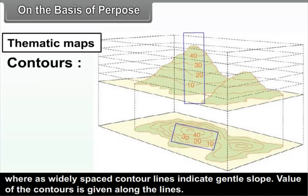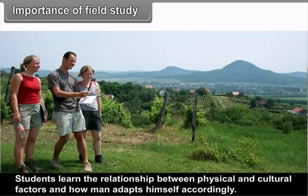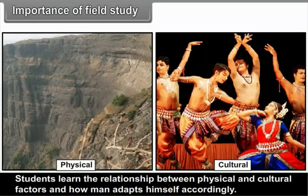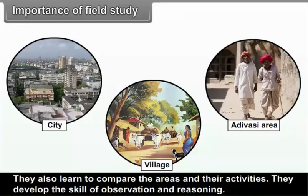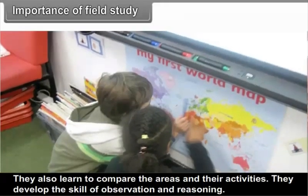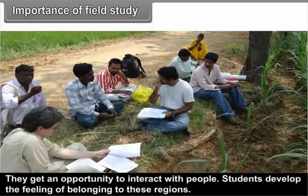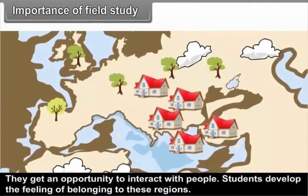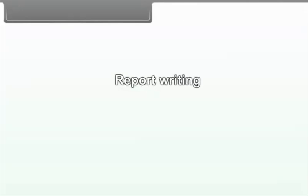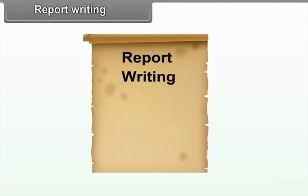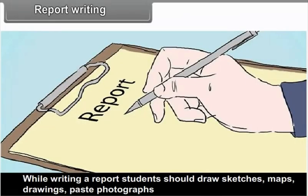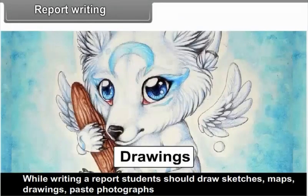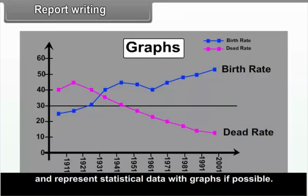Contours are imaginary lines joining all places of the same height above sea level, drawn at equal vertical intervals. If contour lines are spaced close together, they represent a steep slope; widely spaced contour lines indicate a gentle slope. Values of contours are given along the lines. Importance of field study: Students learn relationships between physical and cultural factors and how humans adapt. They compare areas and activities, develop skills of observation and reasoning, interact with people, and develop a sense of belonging. For report writing, students should include all collected information along with sketches, maps, drawings, photographs, and statistical data with graphs if possible.